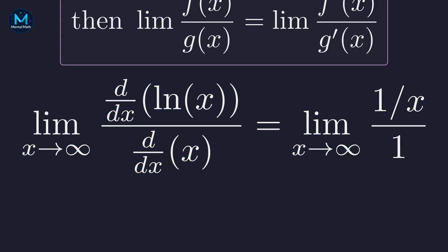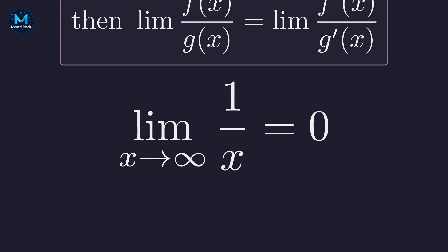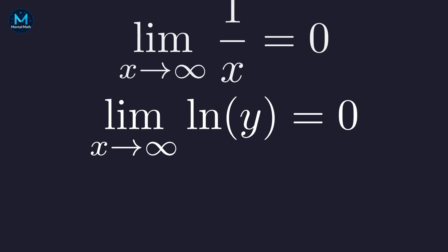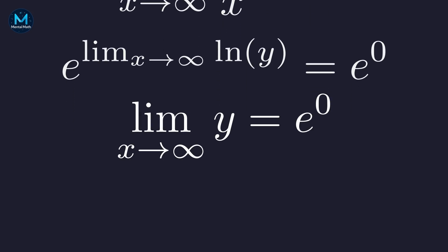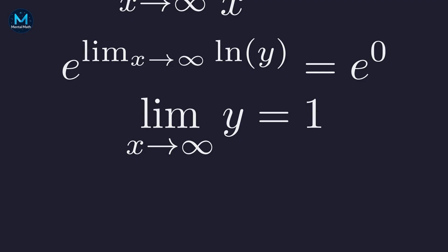Evaluating this simpler limit: as x approaches infinity, 1/x shrinks to zero, so the limit is zero. But remember, this is the limit of the natural log of y, not y itself. To solve for y we reverse the logarithm by exponentiating both sides. Because the exponential function is continuous, we can swap the limit and the function, giving us the limit of y equals e to the zero — and any non-zero number to the power of zero is one. Therefore the limit of our original expression is one.